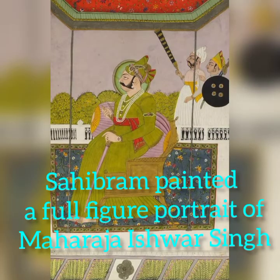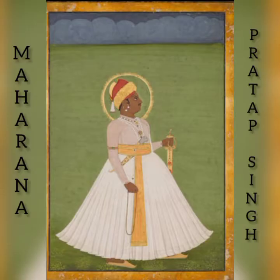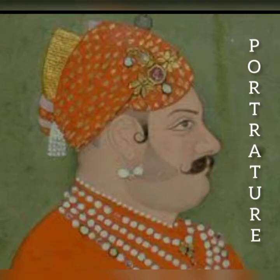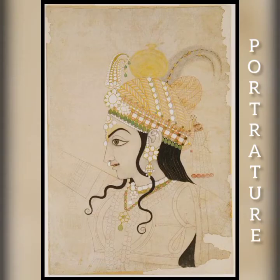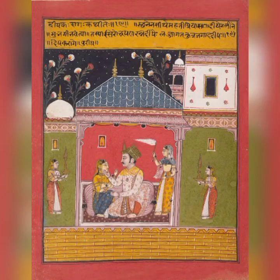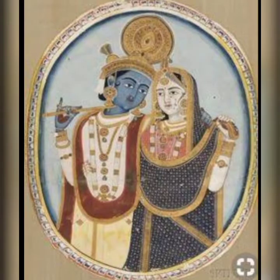Painter Sahib Ram painted a full-figure portrait of Maharaja Eshwar Singh. Lal Chitara was an expert in bird painting. In the reign of Savai Pratap Singh, paintings were done on Ramayana, Mahabharata, portraitures, musical concerts with the king in court, and Nayika Bheda. Raga and Ragini were painted everywhere in Rajasthan.